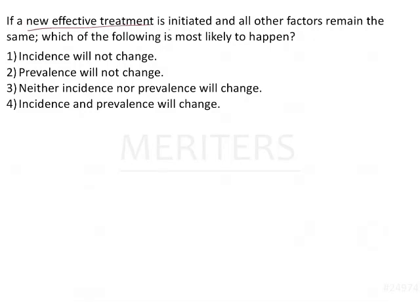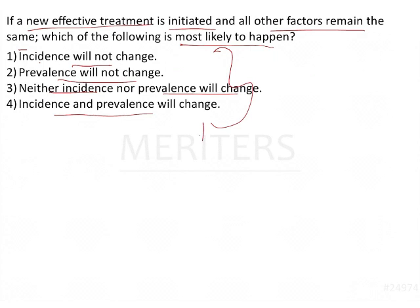If a new effective treatment is initiated and all the other factors remain the same, which of the following is most likely to happen? The options are: incidence will not change, prevalence will not change, neither incidence nor prevalence will change, or incidence and prevalence will change. Looking at the options, all of them are dealing with either incidence or prevalence.